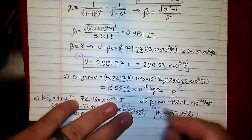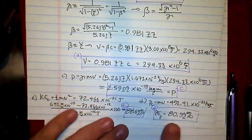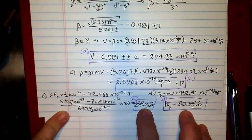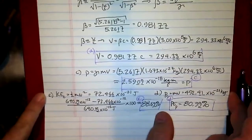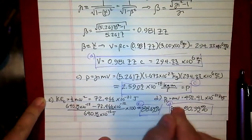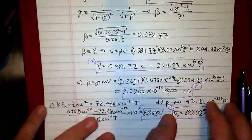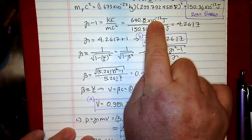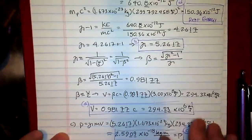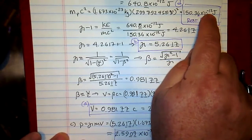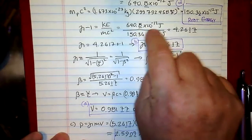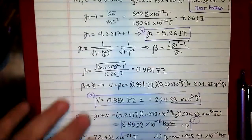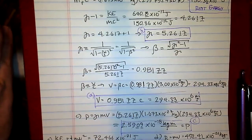Percent error is a fairly straightforward calculation, but as you can see, there's nearly a 90% error from using classical physics instead of relativity. Notice also that the kinetic energy of 4 GeV — 640.8 times 10 to the negative 12 joules — is on the same order as the rest energy of 150.36 times 10 to the negative 12 joules. Whenever kinetic energies approach rest energies, it's time to use relativity. I hope that helps you better understand relativity. Have a good day.